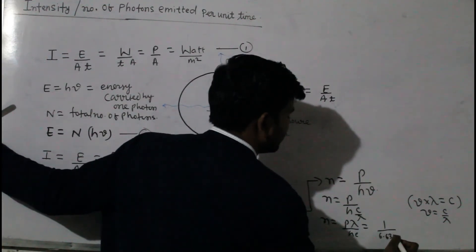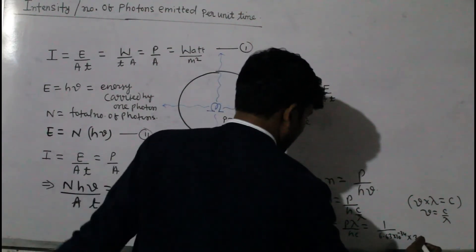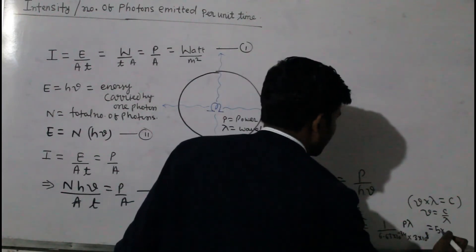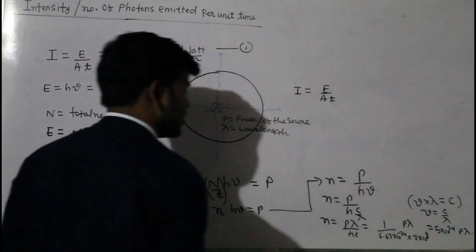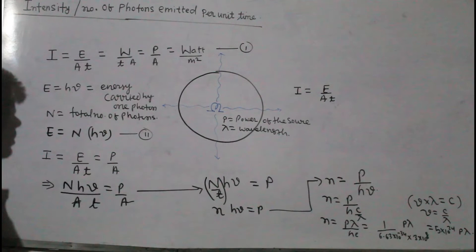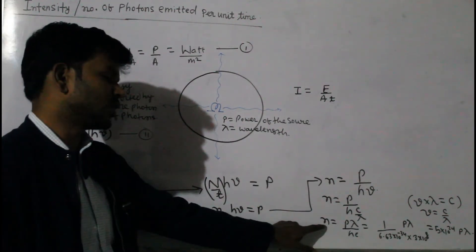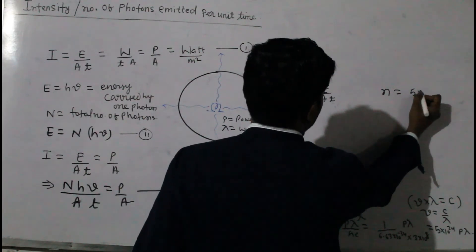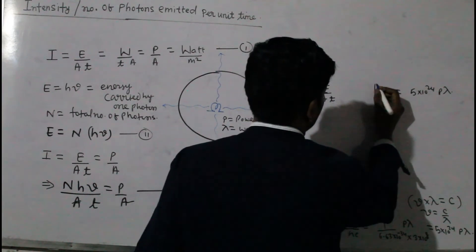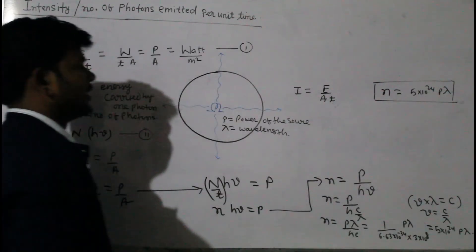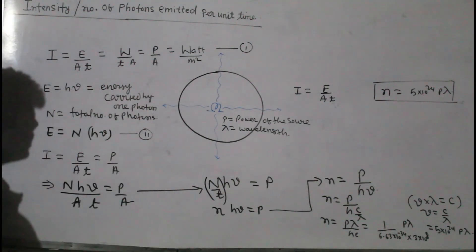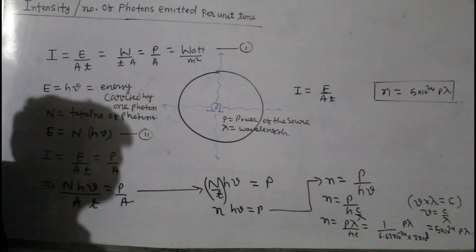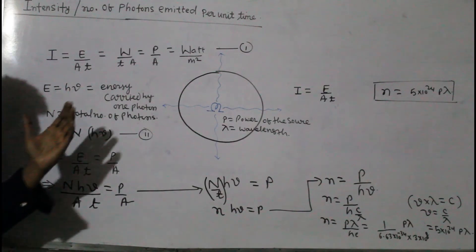We can replace the values of H and C. H equals 6.634 into 10 to the power minus 34, and C equals 3 into 10 to the power 8 meter per second. So n equals P·lambda divided by H·C. After solving this equation, you get n equals 5 into 10 to the power 24 into P into lambda. This is the formula for the number of photons emitted from a source of electromagnetic radiation per unit time. There are many NCERT numericals based directly on this formula: n equals 5 into 10 to the power 24 into P into lambda, where P is the power of the source and lambda is the wavelength.